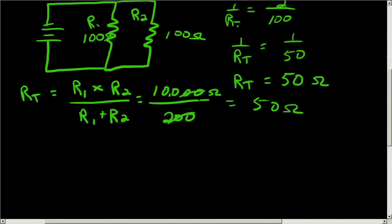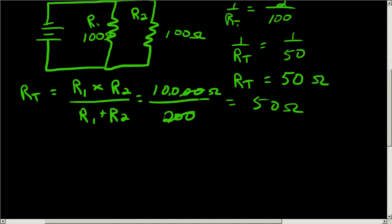And there's one last formula that we can use to calculate total resistance in a parallel circuit when we have resistors of equal value. And all we do is we take the resistance value of one of the resistors, which in this case is 100 ohms, divided by the number of those resistors that we have in parallel. So here we have two, and we see that also will give us 50 ohms.